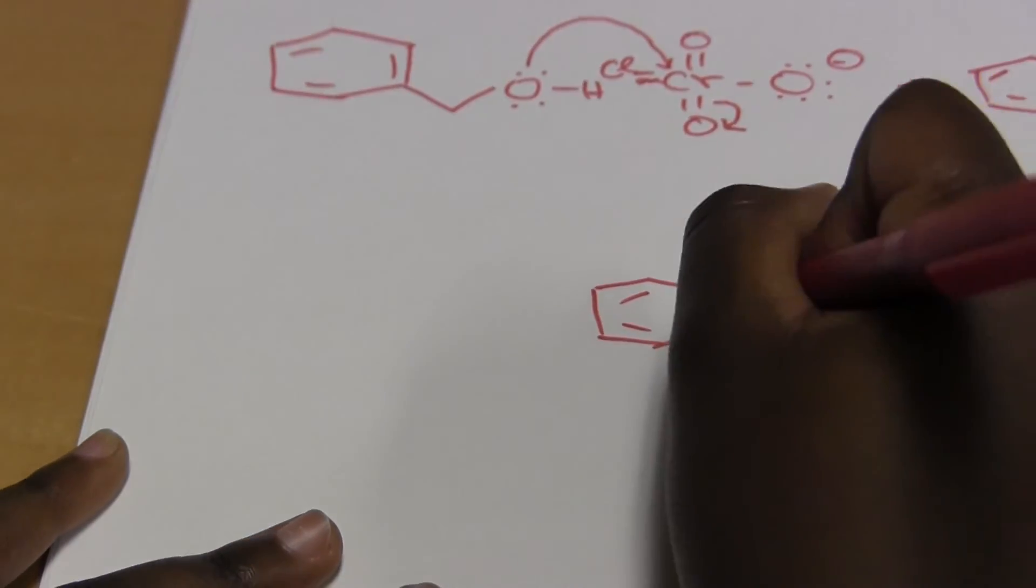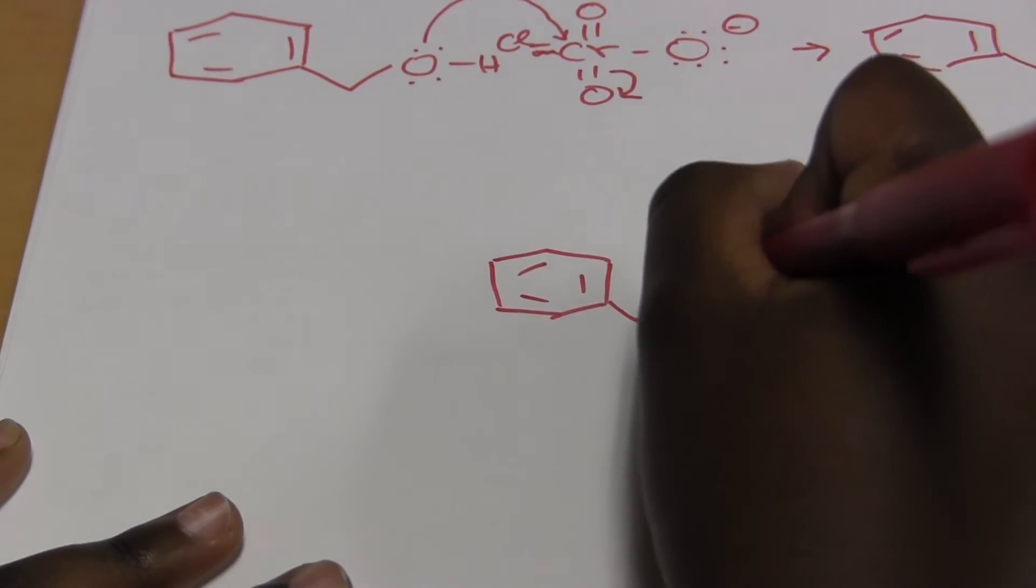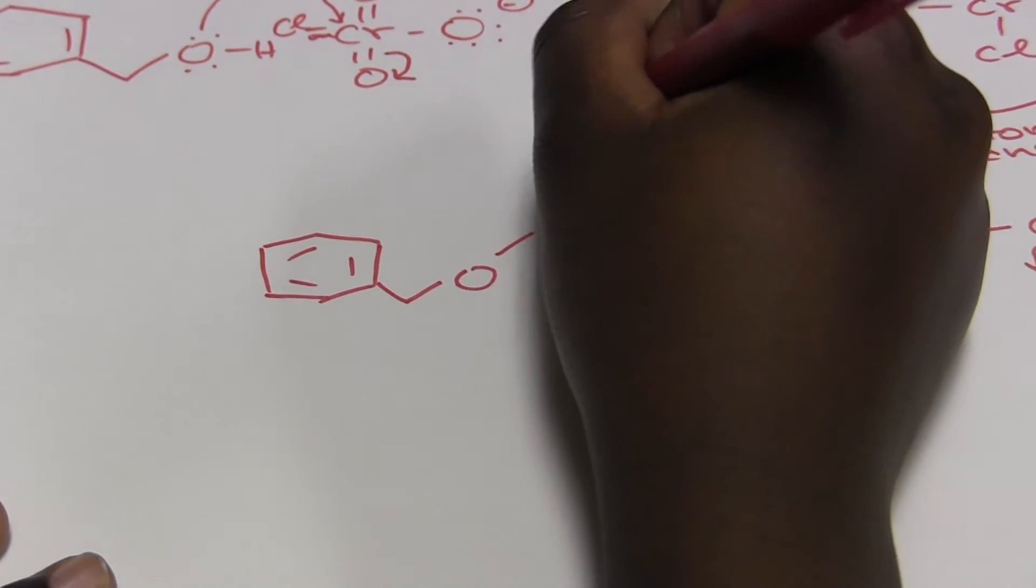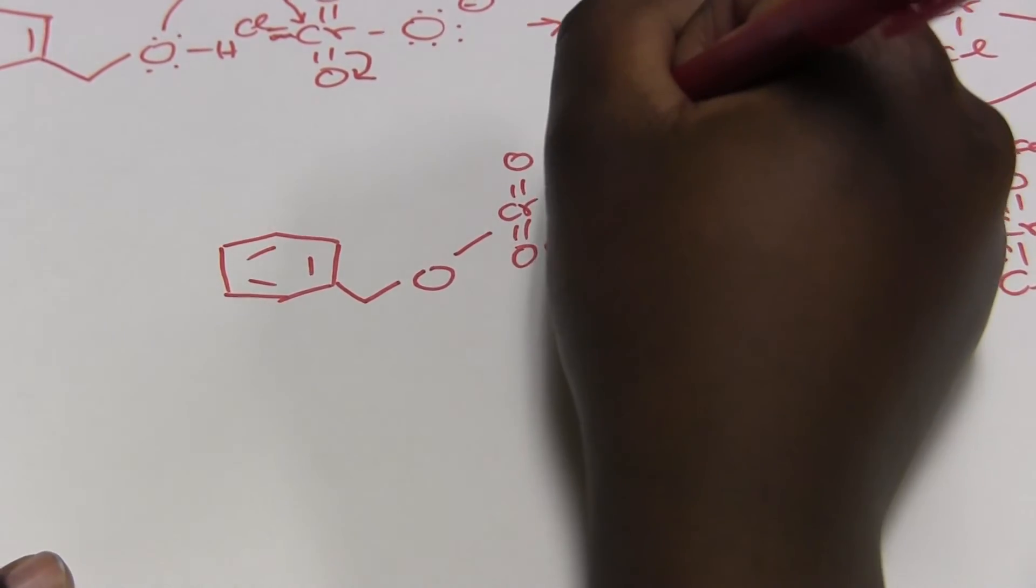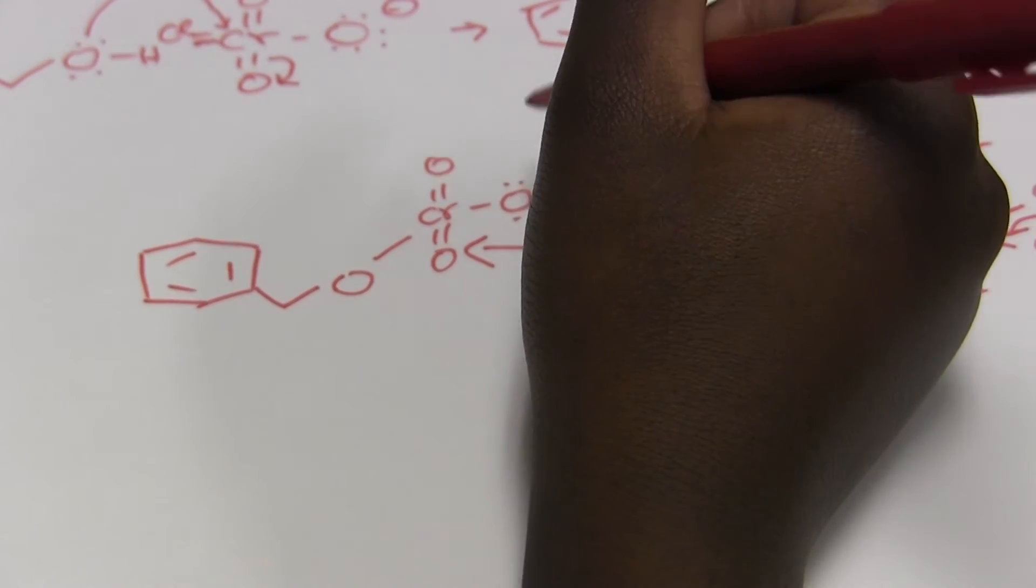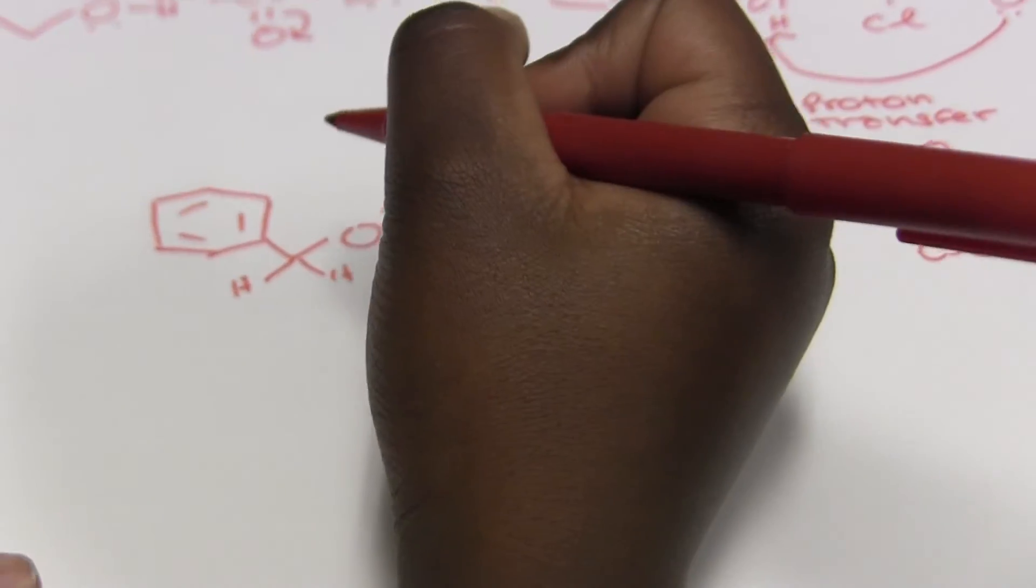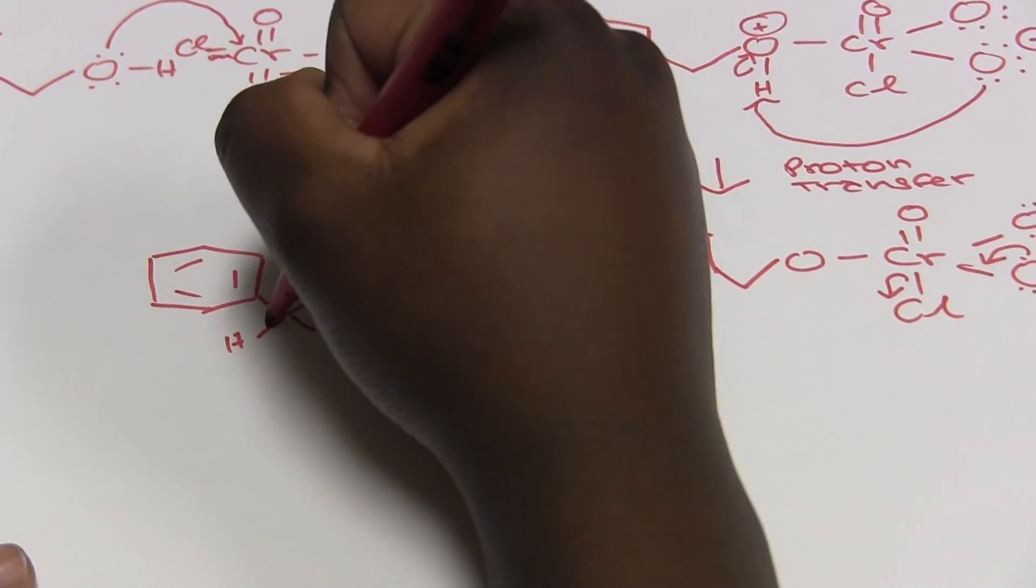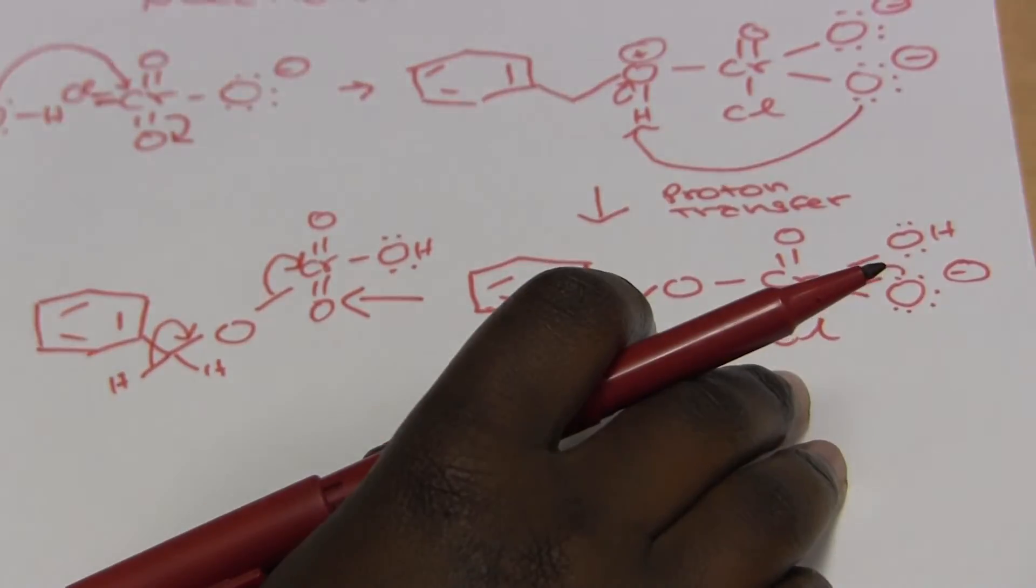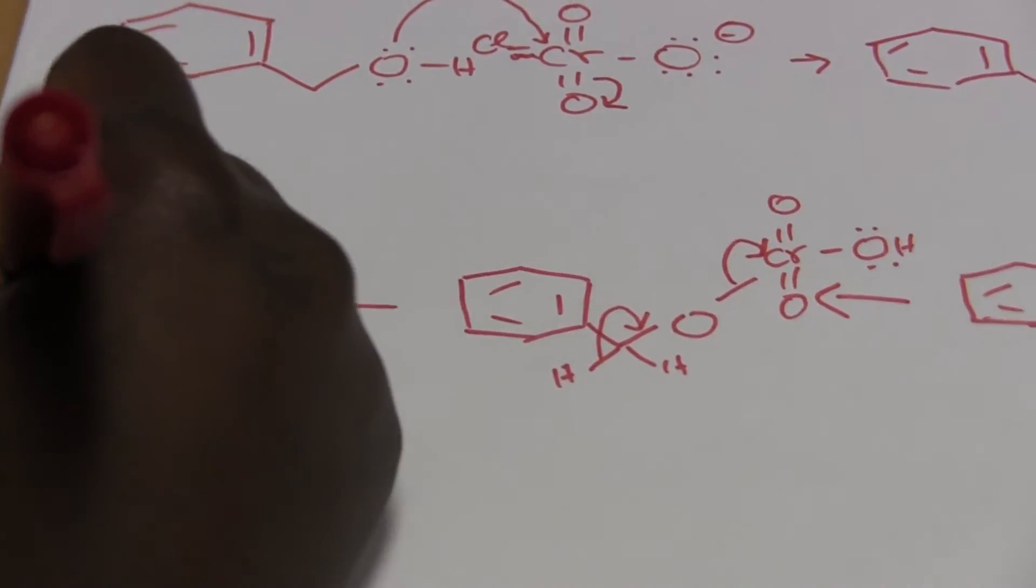So now we're going to have two H's over here. And one of them is going to flip up and make a double bond with this, kicking out the PCC, leading us to a final product of the aldehyde.